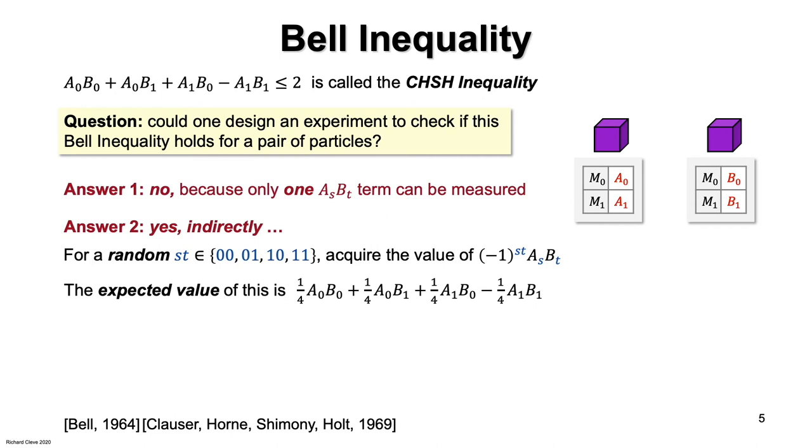What's the expected value of minus one to the ST ASBT? It's this expression. Does it look familiar?